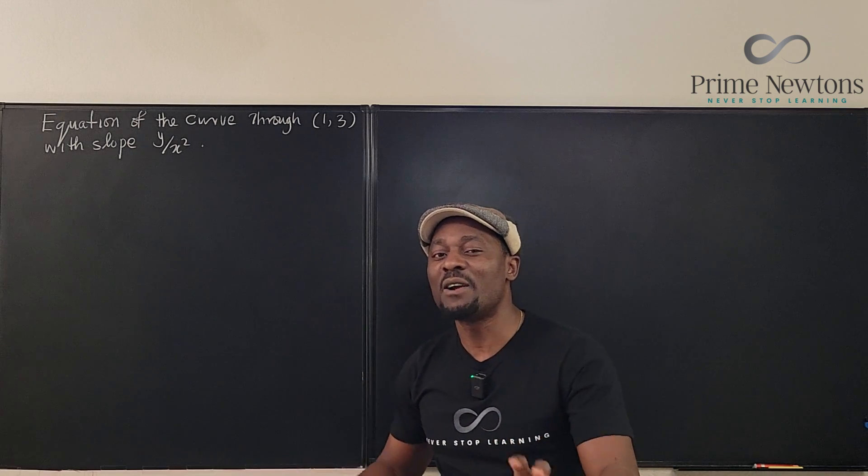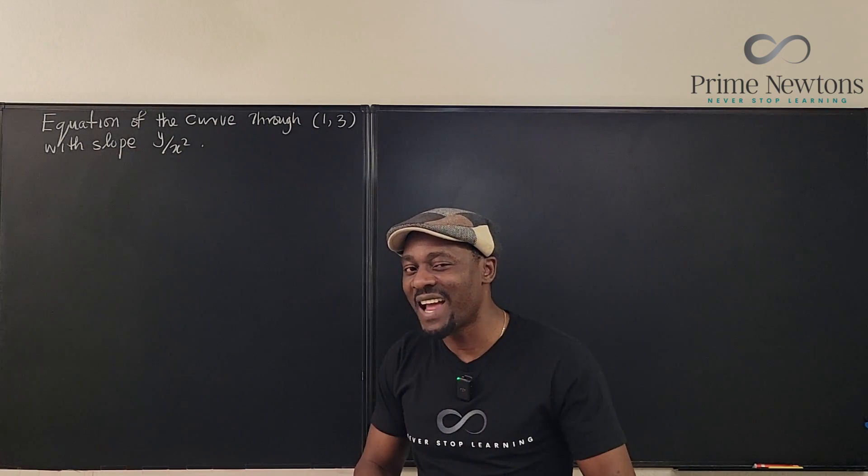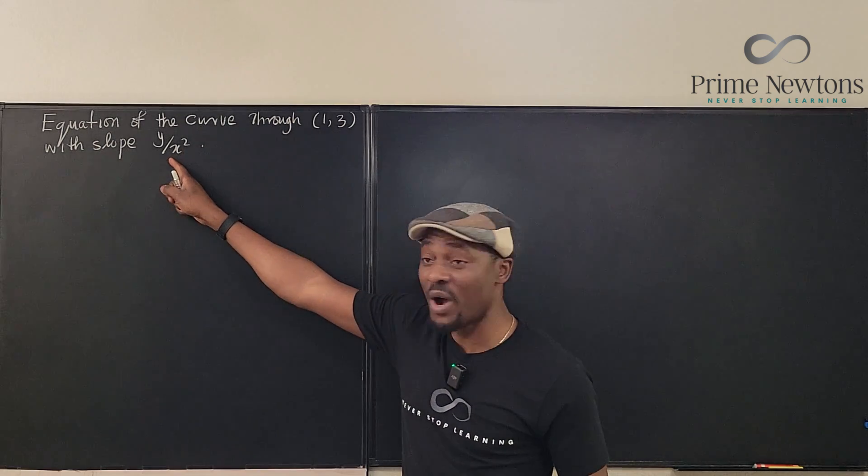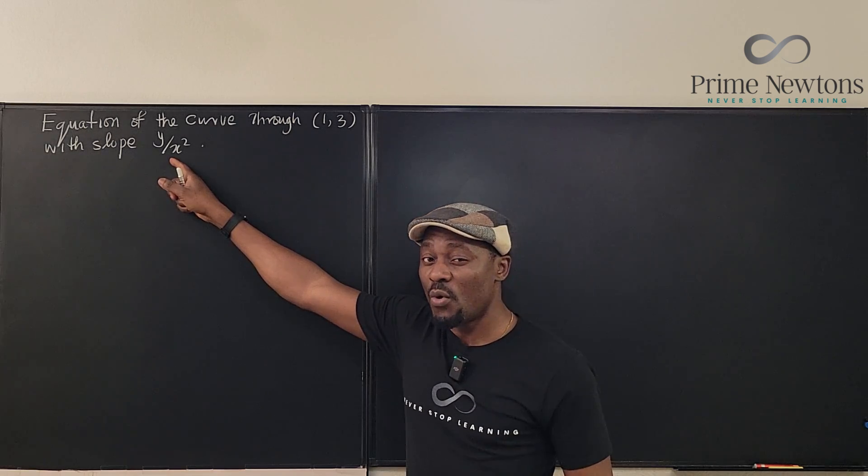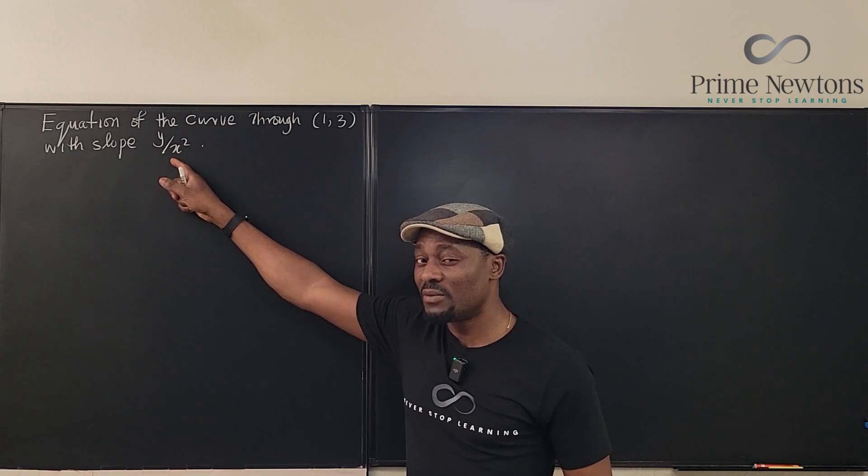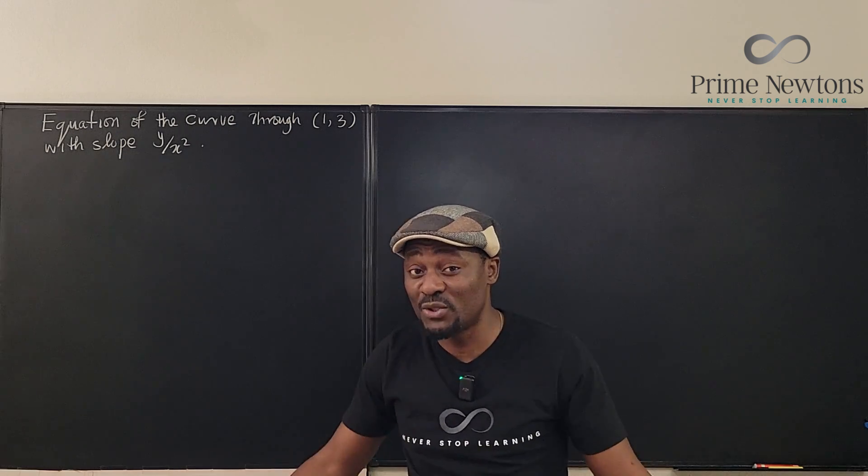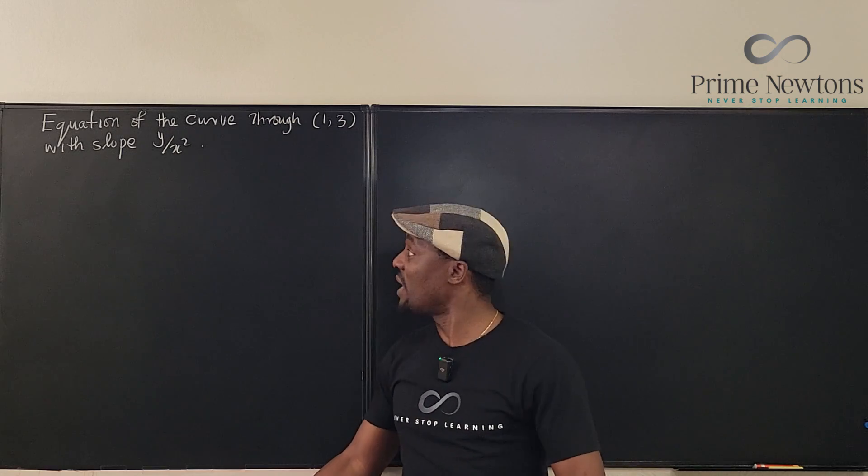But we don't care about the tangent. We're not asking about the tangent at the point. We're asking for the actual curve because we don't know it. We only know what the derivative is going to be. So we can't use the slope intercept form. We can't find the equation of a straight line. We're not even talking about the tangent. So all those are not relevant.